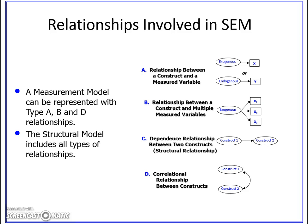There are two types of models involved in SEM. There is a measurement model and a structural model. A measurement model is represented by the relationship between a construct and a measured variable, the relationship between a construct and multiple measured variables, and correlation relationships between constructs. The construct can have either one measured variable or two, three, four, or multiple measured variables.